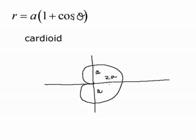You can see that when theta is pi over 2 and 3 pi over 2, r is just a. And when theta is pi, r is zero. So this generates a very interesting graph that also has useful applications.